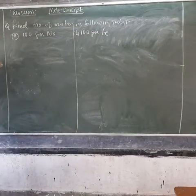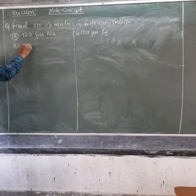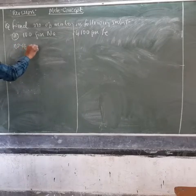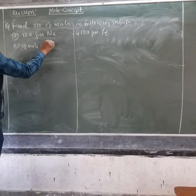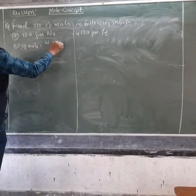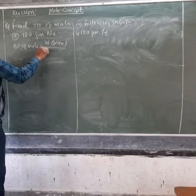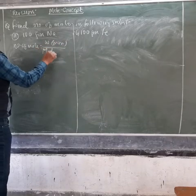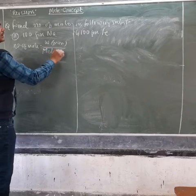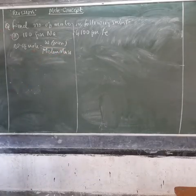So how do we find the number of moles? We have the formula: number of moles is equal to weight given divided by M, which is the molar mass. You can write it out completely — molar mass.